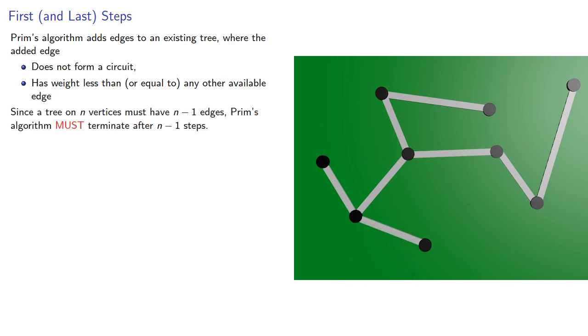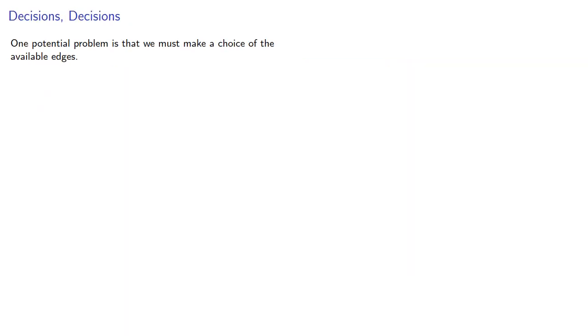Since a tree on n vertices must have n minus 1 edges, Prim's algorithm must terminate after n minus 1 steps. Or does it? One potential problem is that we must make a choice of the available edges.